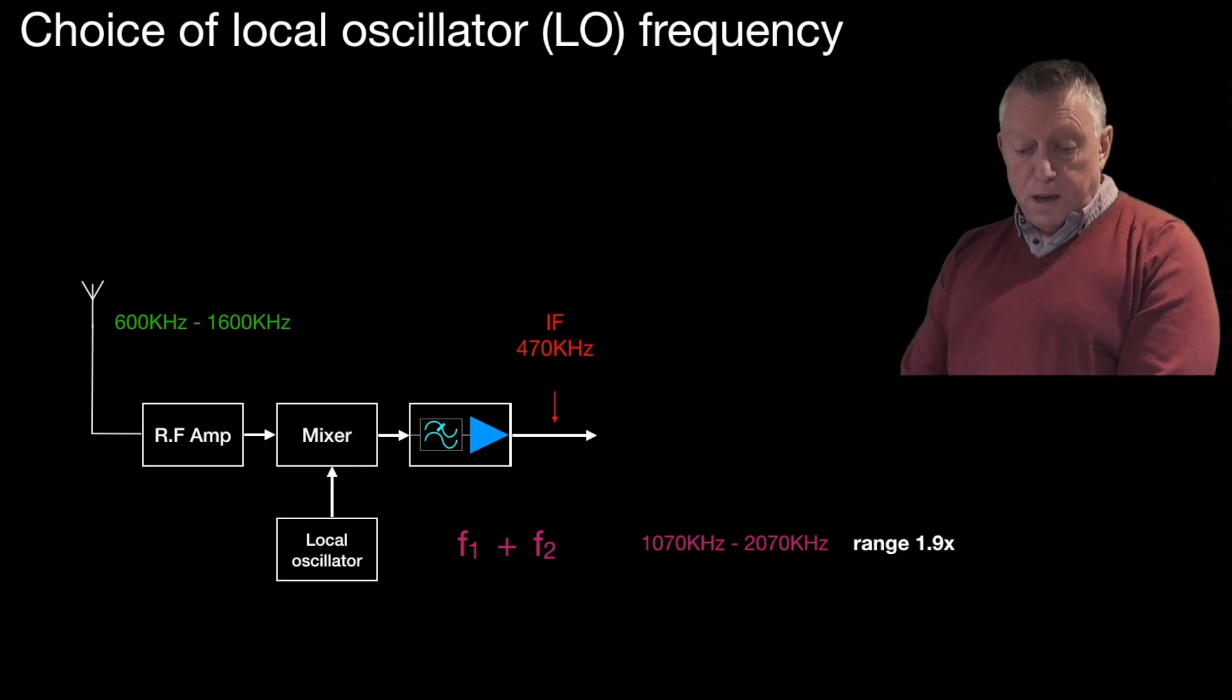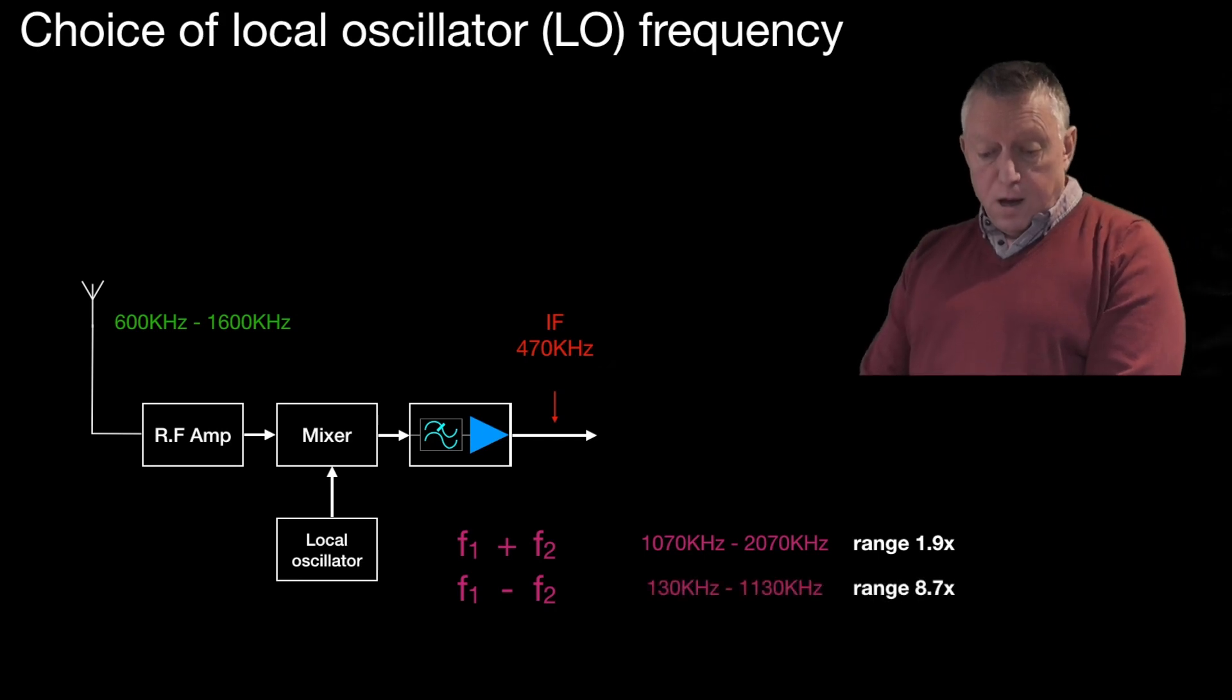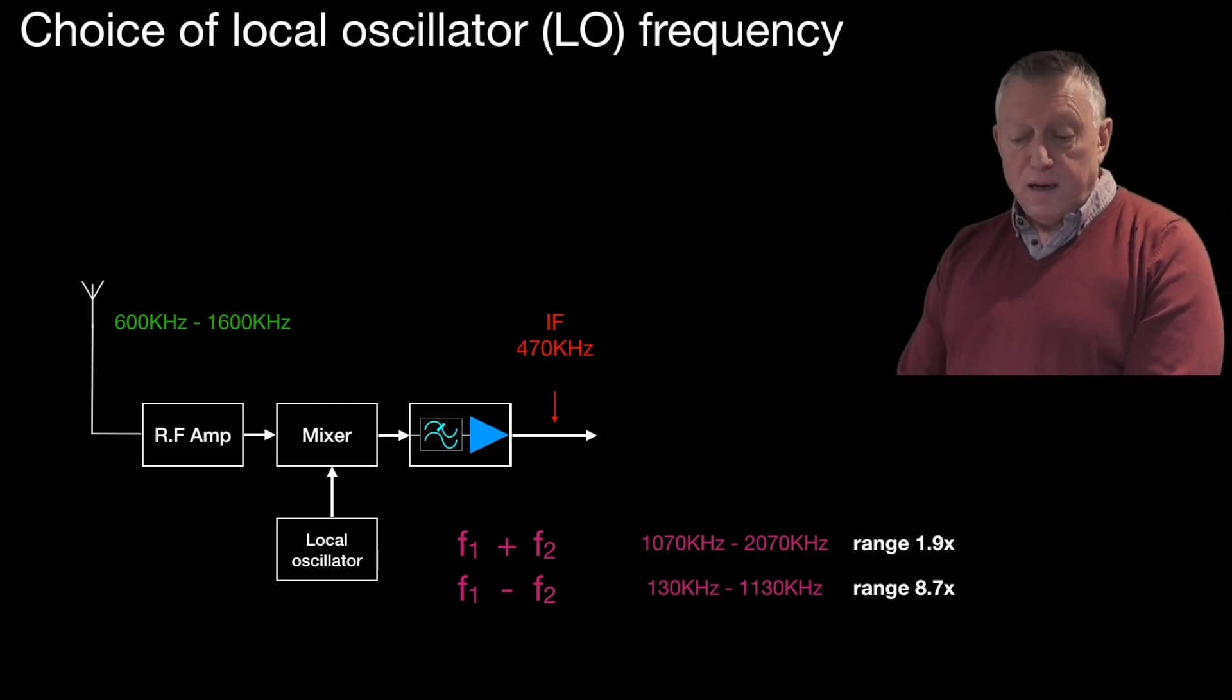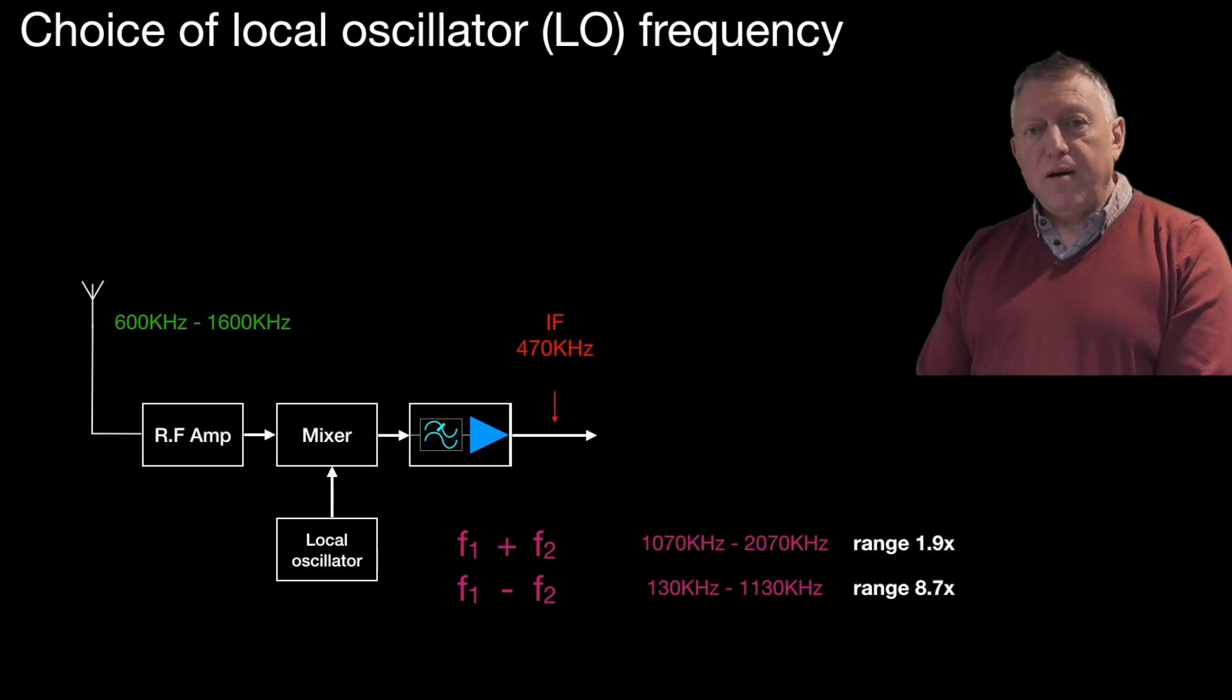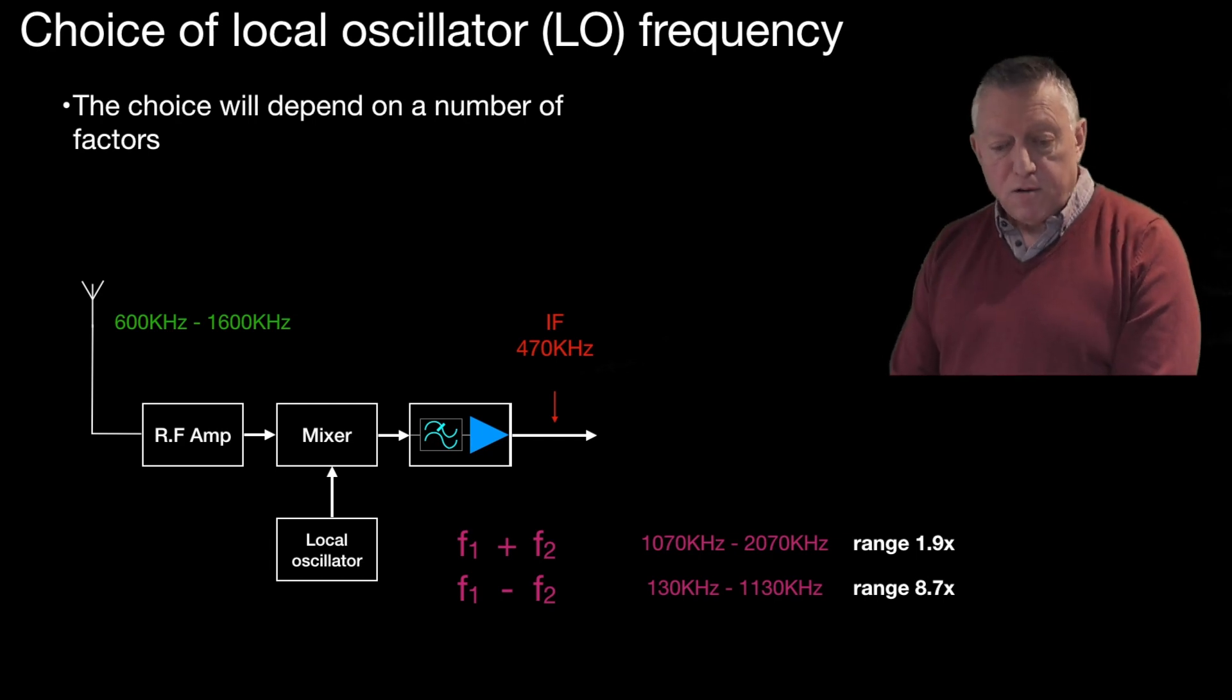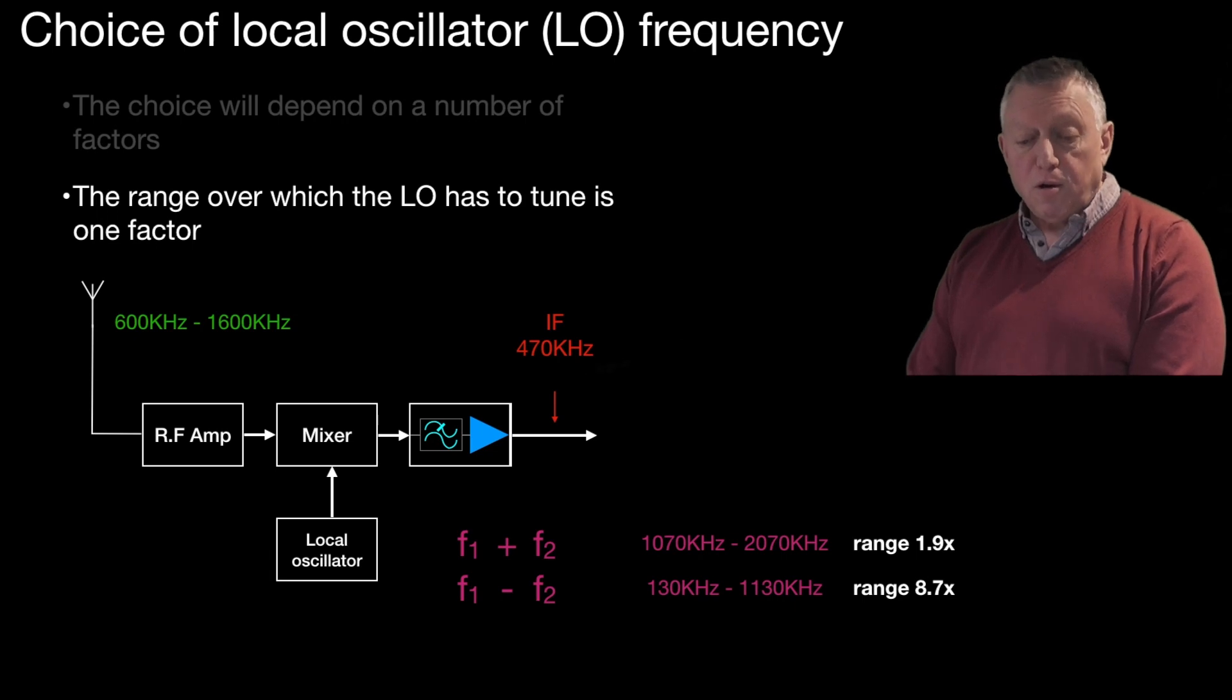If we took F1 minus F2, we would have 130 kHz to 1130 kHz, which would be a range of 8.7 times. That's quite a big range and would be difficult to achieve. Choice of local oscillator frequency can be affected by how much we want it to track. This example is given at MF and tends to exaggerate the differences. As you move up into HF and VHF, the differences are not so acute. The choices are based on a number of factors: the difficulty of designing the oscillator at those frequencies and the range over which the local oscillator has to tune.